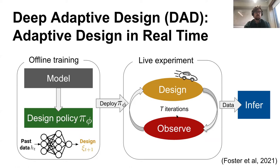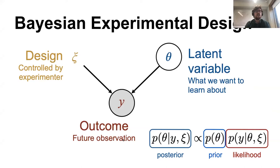This whole talk is based around Bayesian experimental design — a framework for designing experiments in an optimal manner. We assume access to three things: a design (the thing we're controlling and trying to optimize), theta (the latent variables, the factors of interest we want to learn about — in the psychology experiment, the underlying factors dictating how people respond), and outcomes. When we run a design with an unknown latent variable, some outcome results. These three things are naturally linked by a Bayesian model.